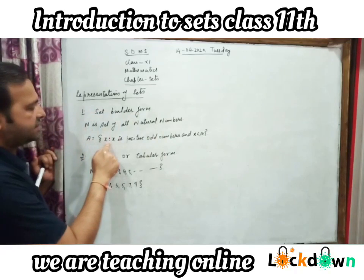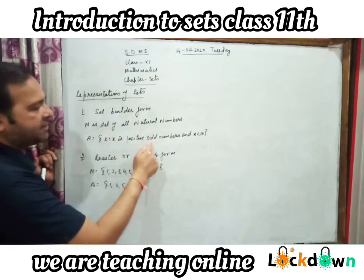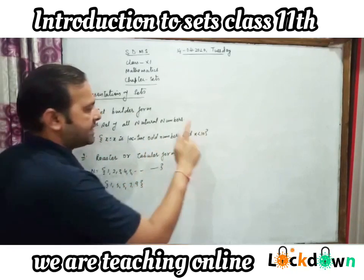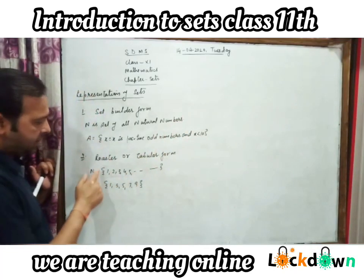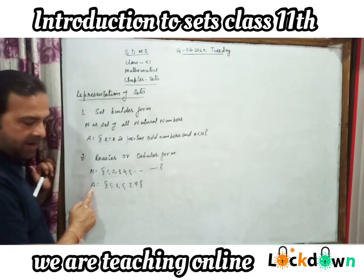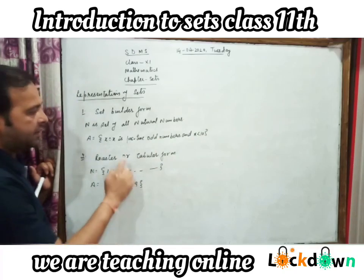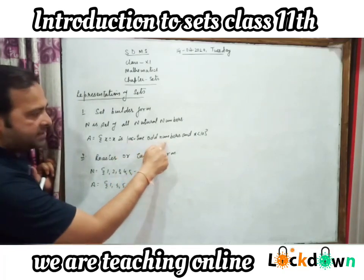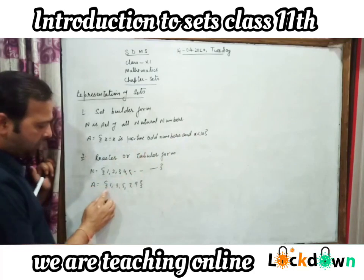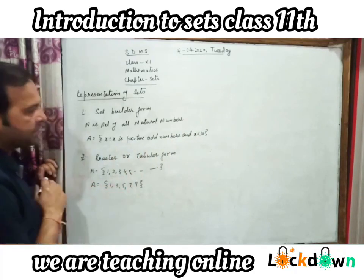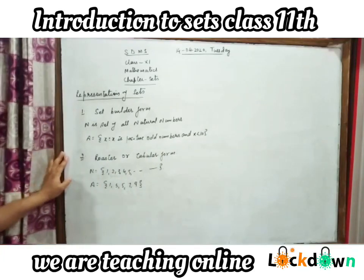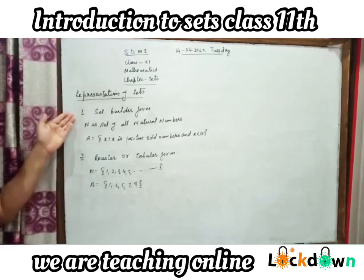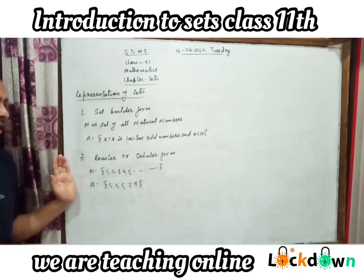A second example: A = {x | x is a positive odd number and x < 10}. How can we write this in Roster Form? A = {1, 3, 5, 7, 9}. The elements of set A are 1, 3, 5, 7, 9. These are the two forms by which we can represent a set: Set Builder Form and Roster or Tabular Form.